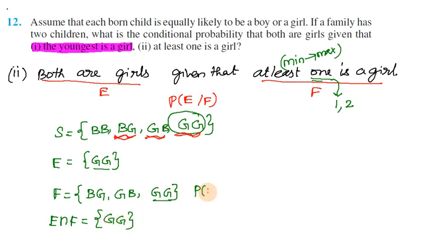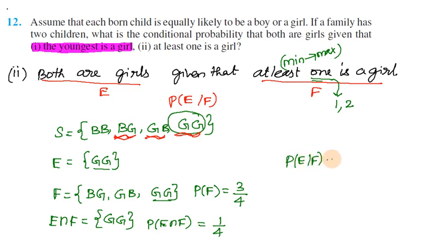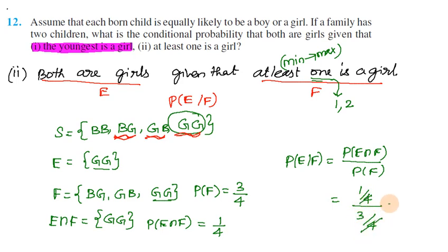P(F) = 3/4. P(E intersection F) = 1/4. Using the conditional probability formula, P(E given F) = P(E∩F) / P(F) = (1/4) divided by (3/4) = 1/3. So the answer to the second sub-division is 1/3.